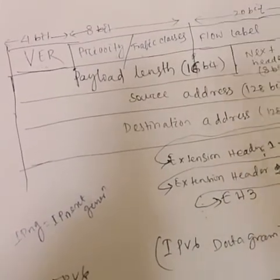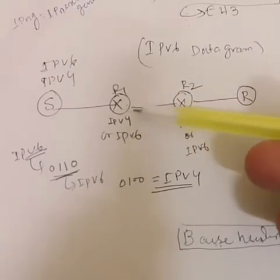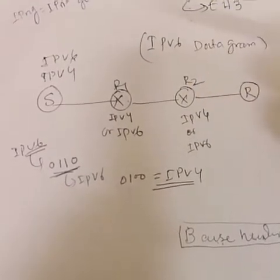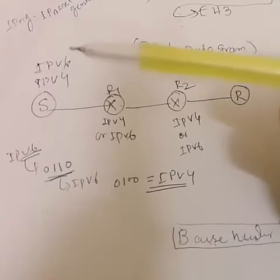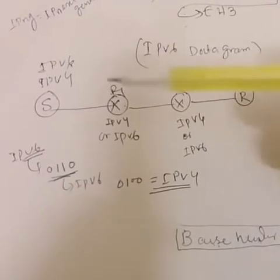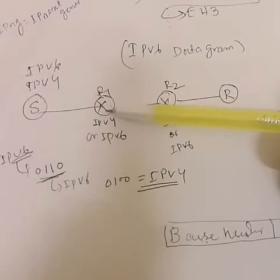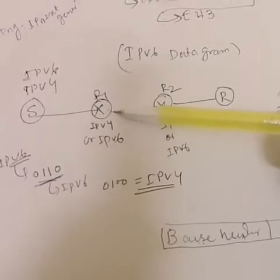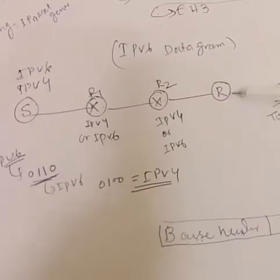When a router gets a packet — for example this router R1 — it may have IPv4 software or IPv6 software. When the router receives a packet, depending on the type of packet, it sends it to the appropriate unit. If it is receiving an IPv4 packet, depending on whether the next router's network supports IPv4, it will forward the IPv4 packet to the destination.